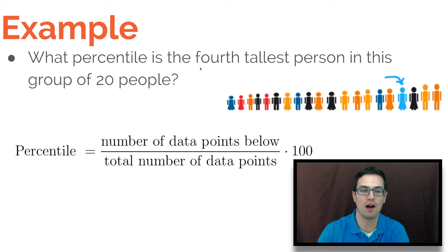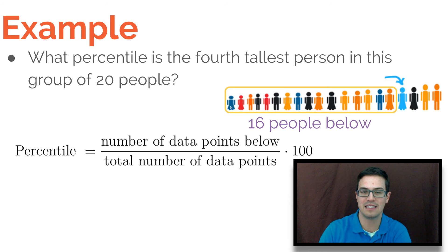So what we're going to do first is write down our equation for percentile. So again, it's number of data points below divided by total number of data points times 100. So the first thing we're going to want to figure out is the number of data points below. So basically, that's this group right here. There are 16 people below this fourth tallest person.